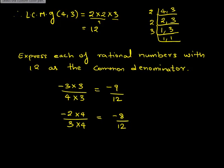So here we have common denominator of 12. Now rational numbers having the same denominator can be compared by comparing its numerator. So now let us compare the numerators.